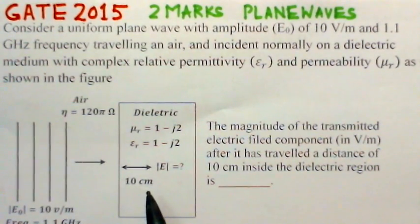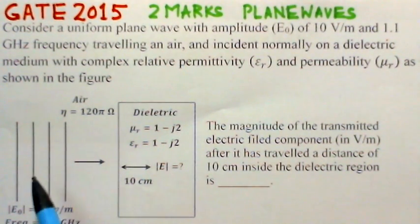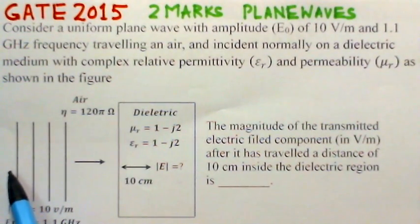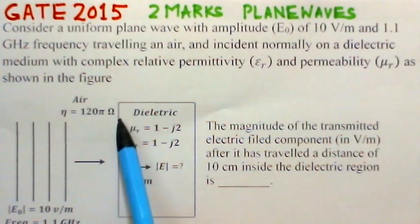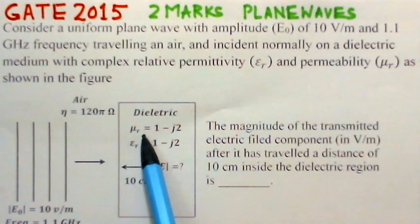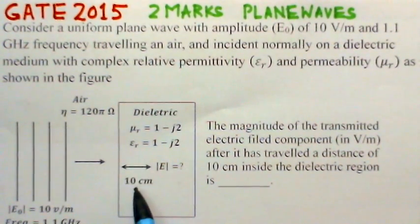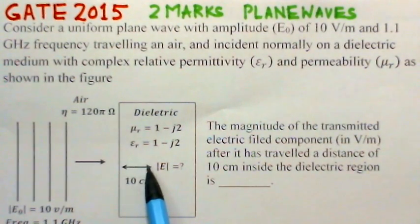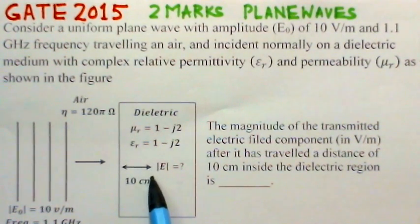This is the corresponding figure for this problem. We consider a free-space (air) medium with a plane wave propagating in it, entering a dielectric with complex permeability and complex permittivity as given. We have to find the electric field inside the dielectric after 10 centimeters from the interface — that is, what would be the electric field at that point when you traverse 10 centimeters within the dielectric.